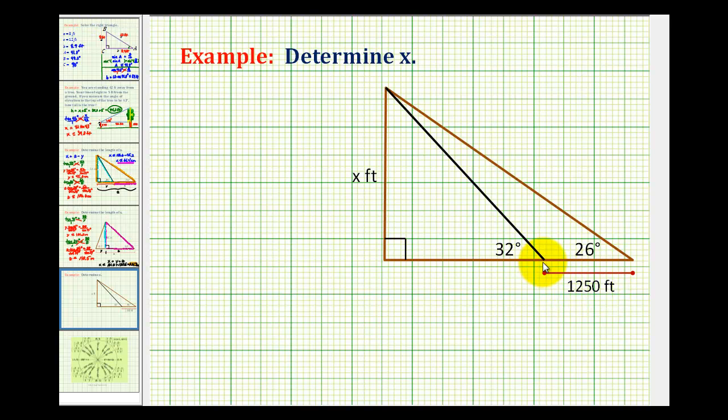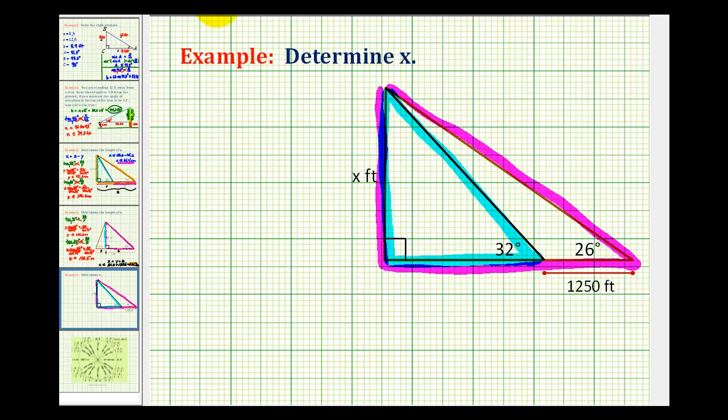This is actually a fairly challenging question. We should notice right away that there are actually two right triangles here. There's this one and this larger right triangle, and one of the more challenging parts about this problem